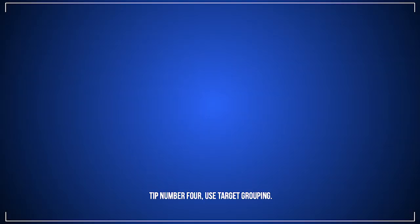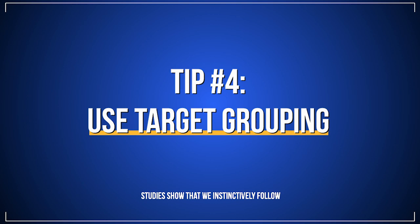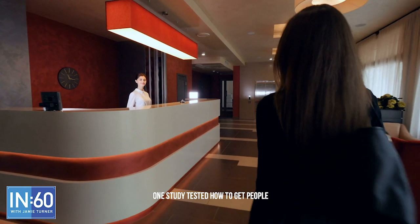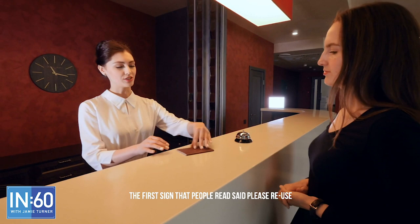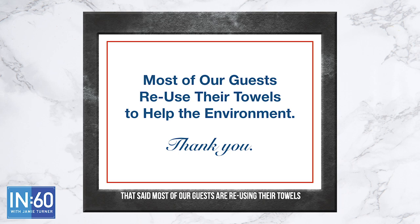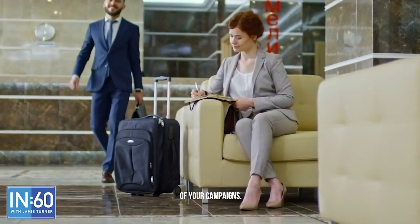Tip number four: use target grouping. Studies show that we instinctively follow in the footsteps of other people we have things in common with — when we see people like us behaving a certain way, we're more likely to follow. One study tested how to get people to reuse their towels at hotels. The first sign said "Please reuse your towels to help the environment," but a second sign that said "Most of our guests are reusing their towels to help the environment" increased re-usage by 26%. That's called target grouping, and it can improve the results of your campaigns.